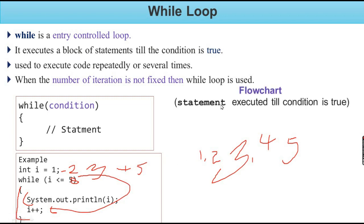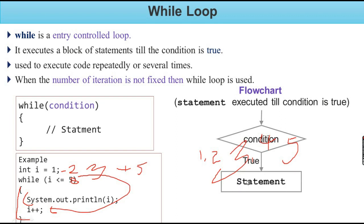Now let's look at the flow chart or diagram. Statement is executed when the condition is true. The condition or expression is evaluated — if it returns true, the statement is executed and we return to check the condition again. That means `i <= 5`. If the condition is true, the statement executes. Then the while loop exits when the condition becomes false.